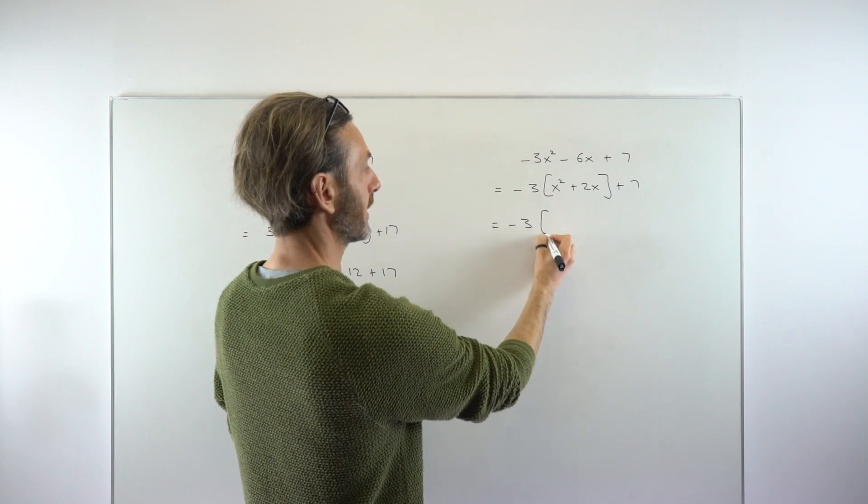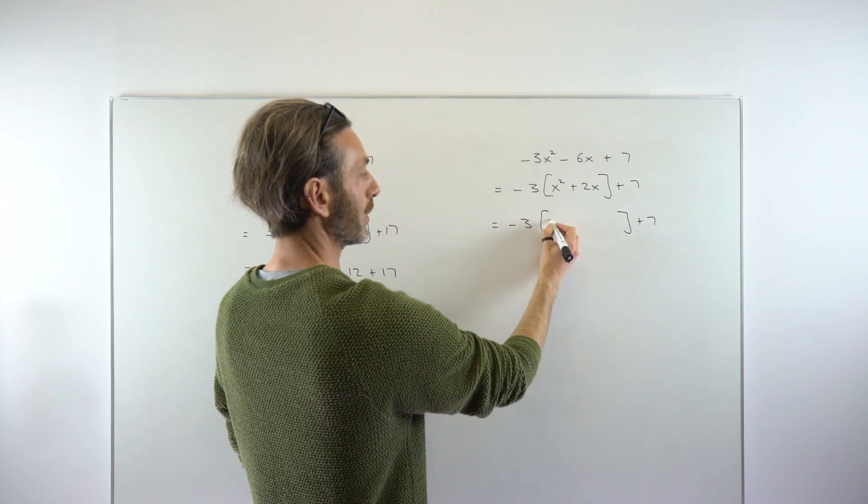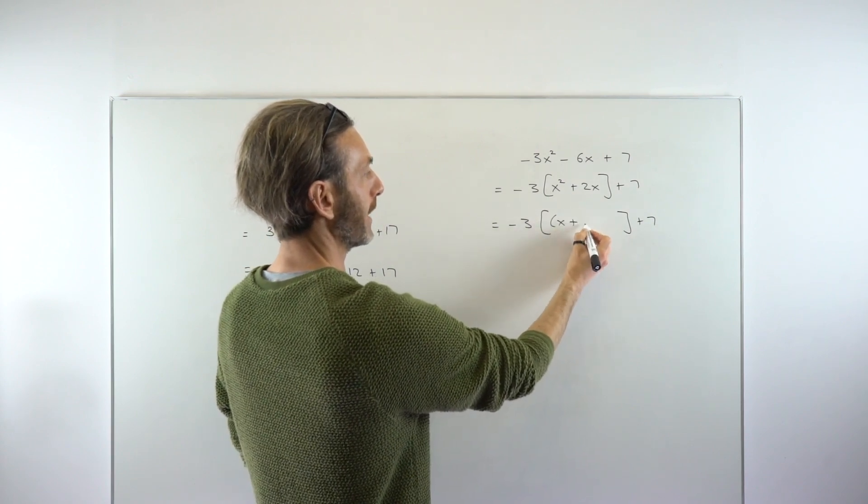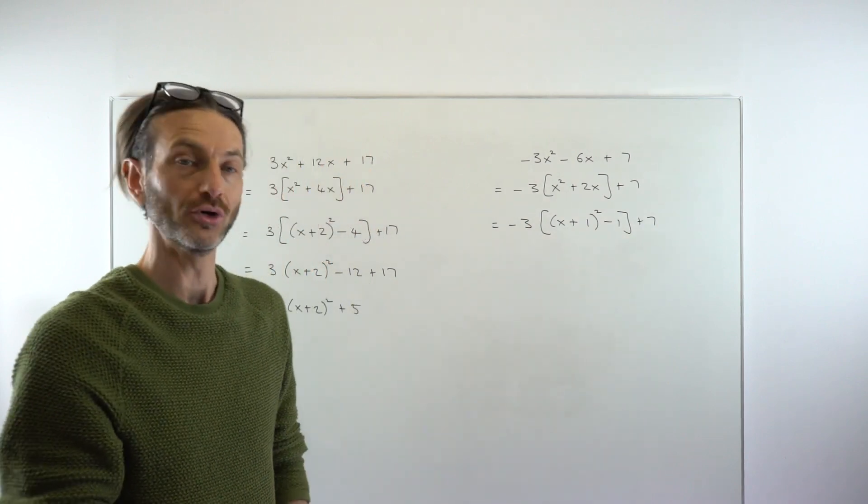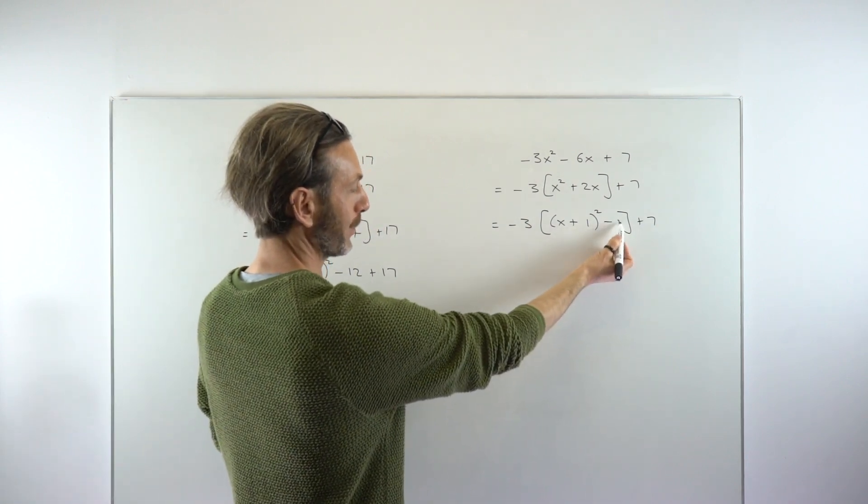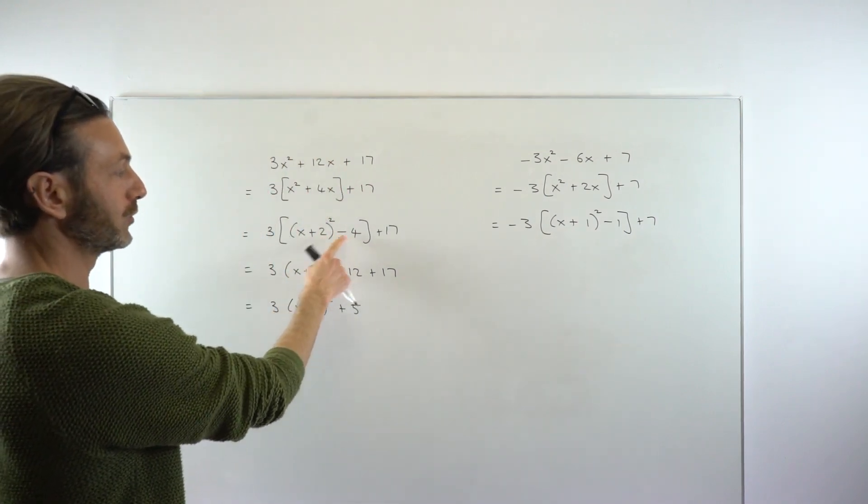Keep the square bracket and then we're going to do completing the square on the inside. That's going to be x plus 1 all squared, taking away that number squared—so 1 was in the brackets, we're taking away 1 squared which is 1.